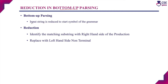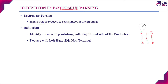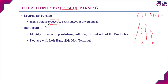Bottom-up parsing is nothing but the given input string being reduced to the start symbol of the grammar. So if the input string is A plus B, this will be reduced to the start symbol of the grammar, which is E. The important concept involved in bottom-up parsing is reduction — in every step, we reduce the substring until it reaches the start symbol of the grammar.